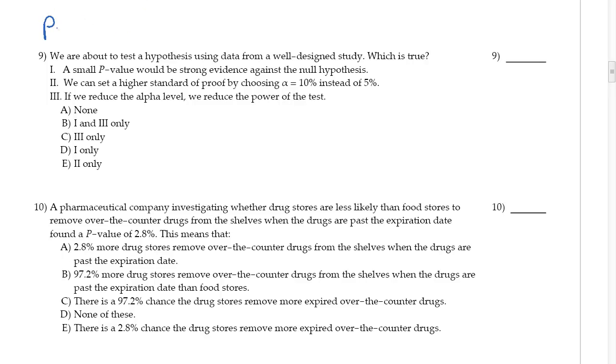Okay, so here we go with part three, the real part three, sorry about that. So we are about to test a hypothesis using data from a well-designed study. Remember, whenever it says well-designed, we're going to assume that our assumptions are met—that it's independent and random, less than 10 percent of the population, and we have at least 10 successes and 10 failures.